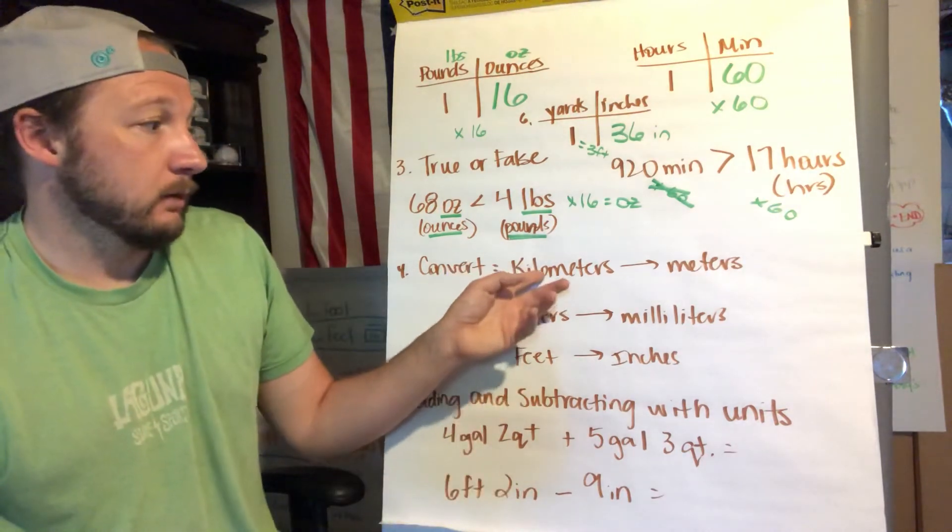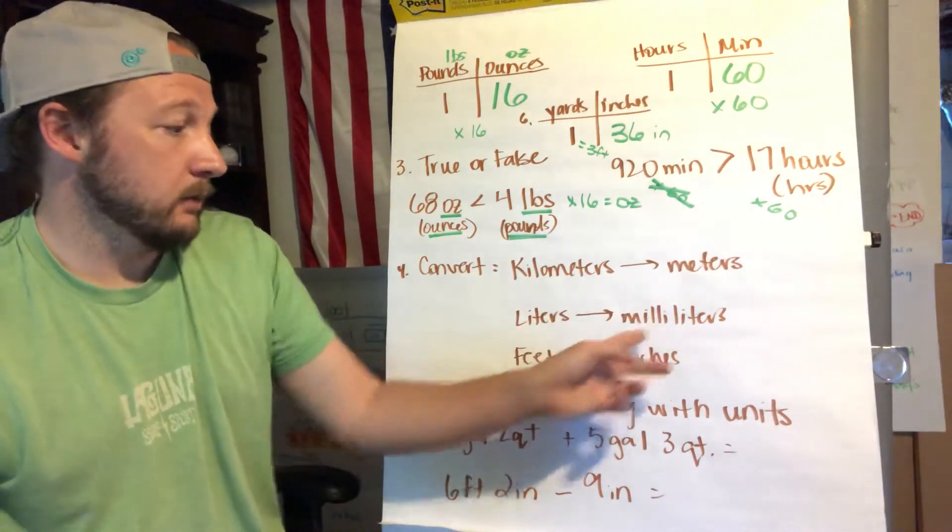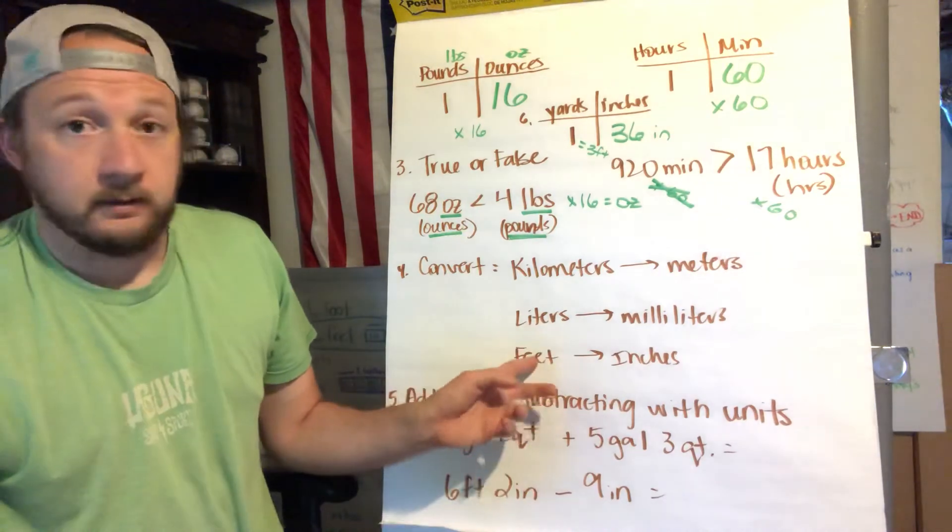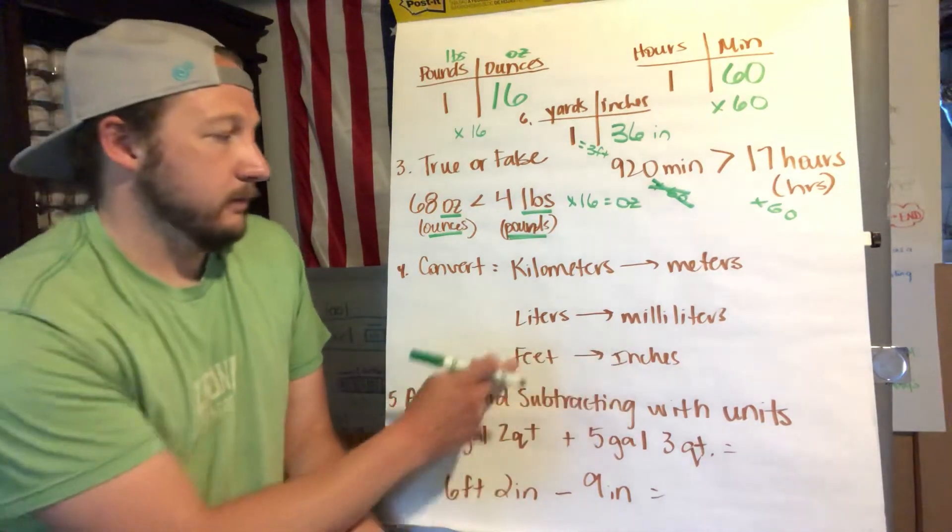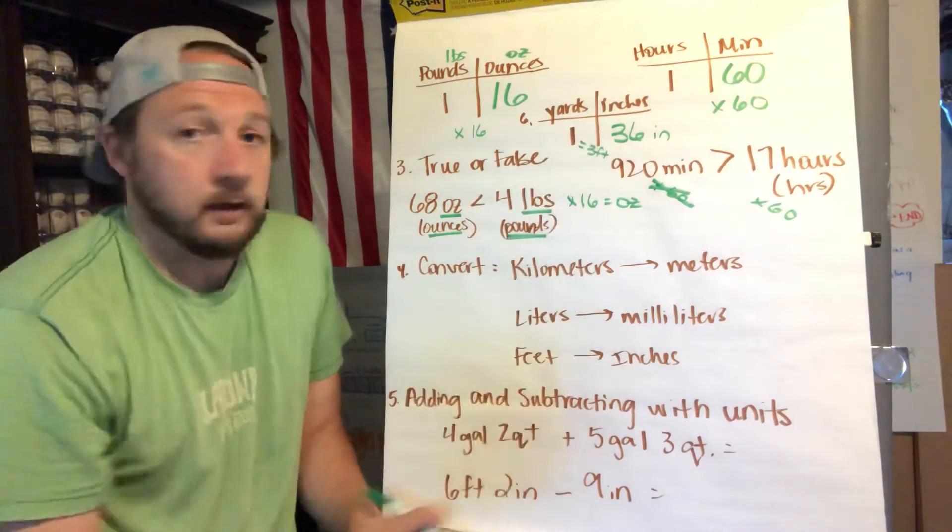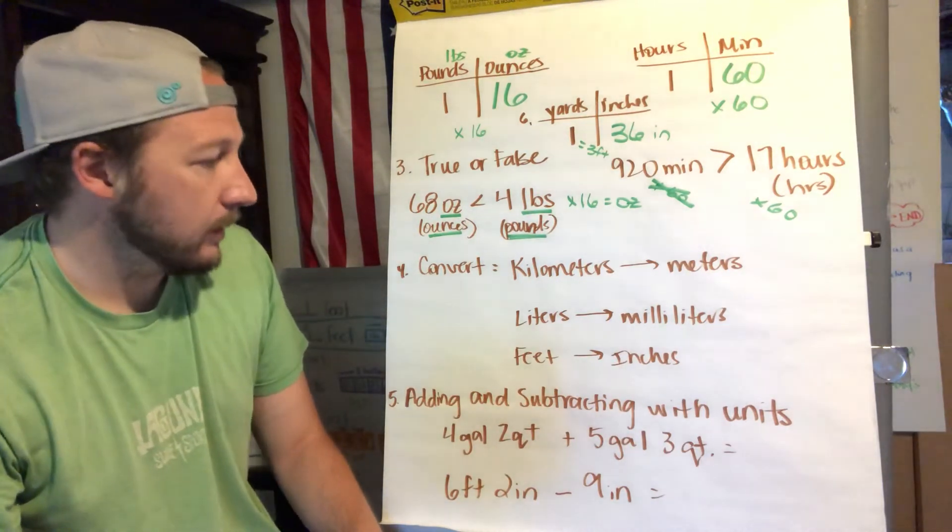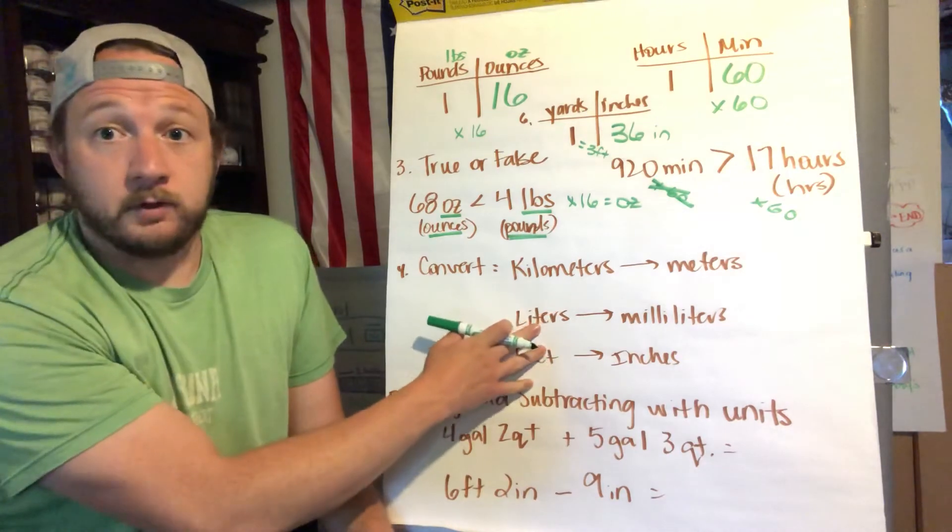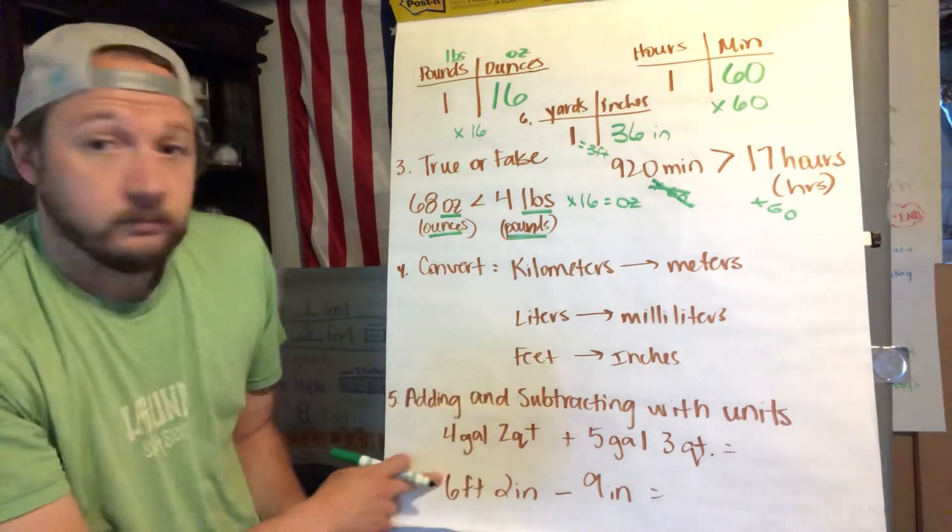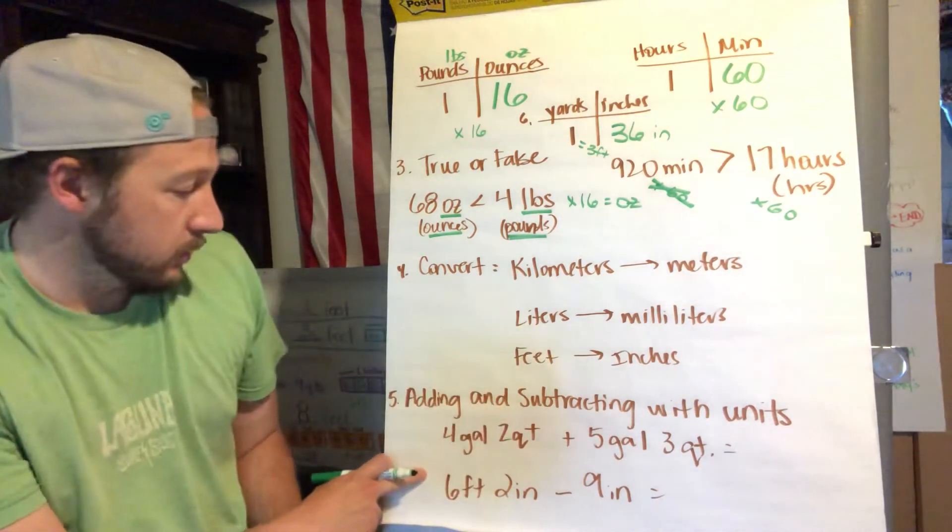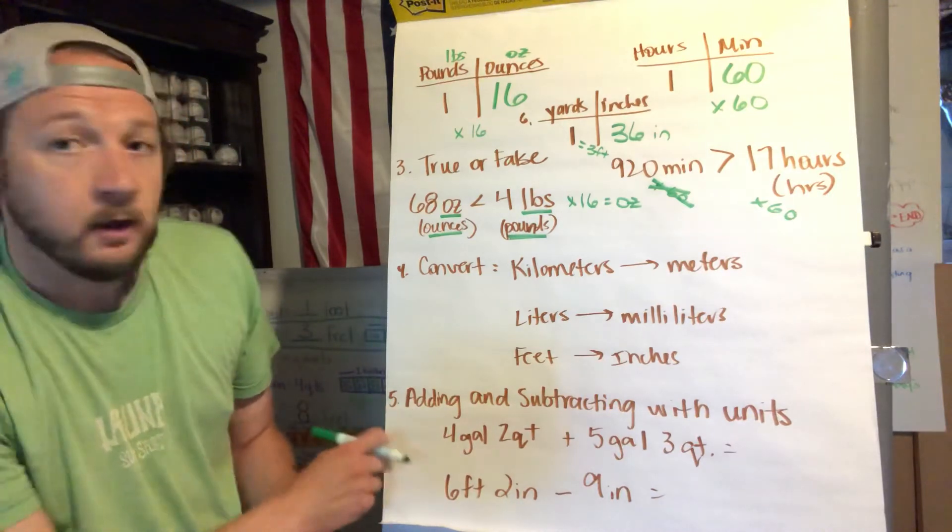Okay, so that's number three without giving you the actual answers. Number four is all about converting again. Okay, again, these are all, if you don't know them maybe look them up, but these are metric: kilometers, meters, liters, milliliters, and then we get the last one, feet inches, which we already did.